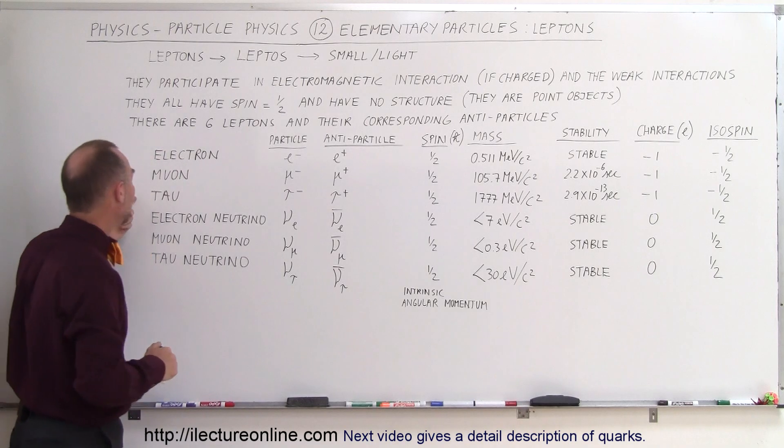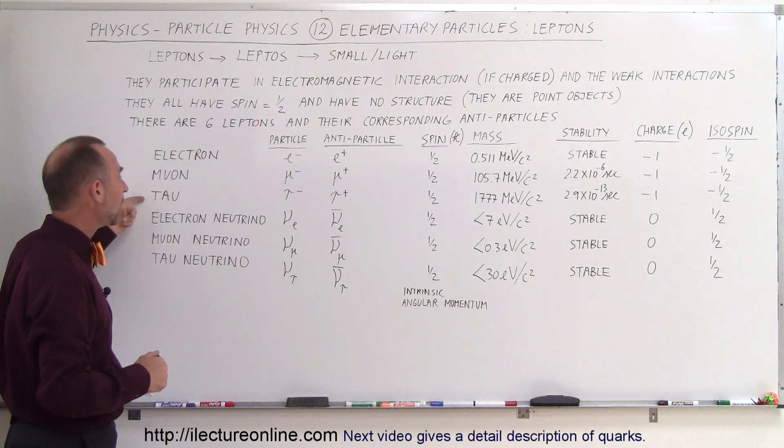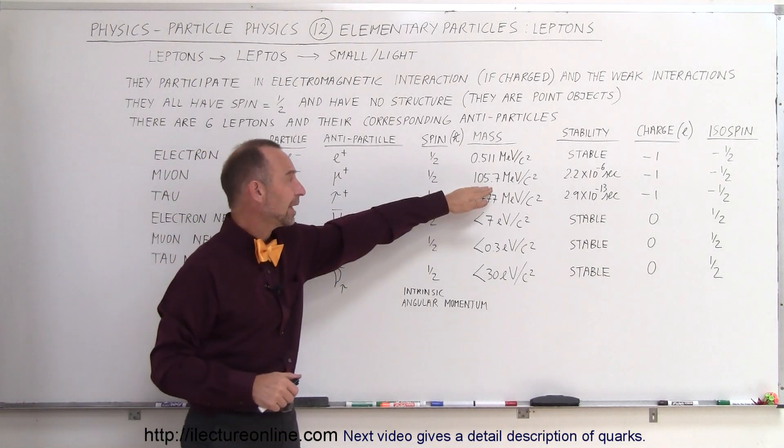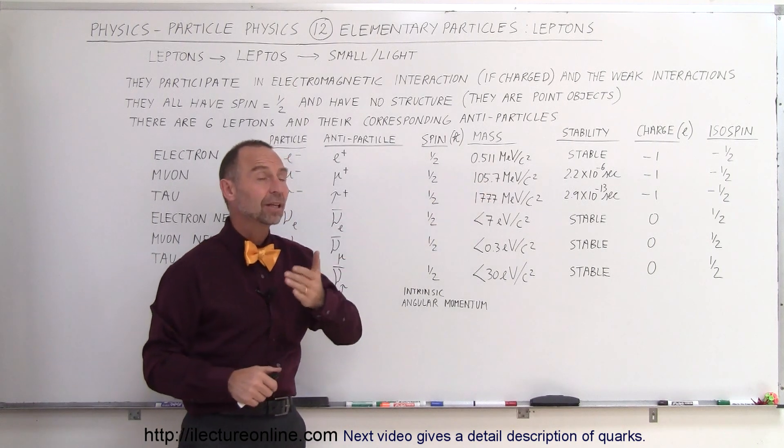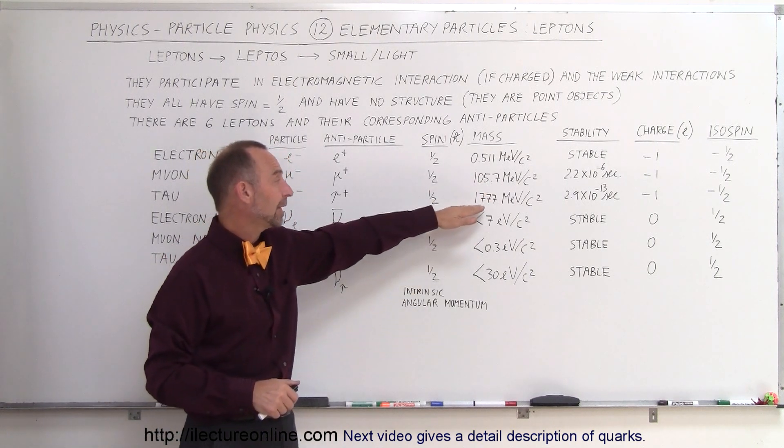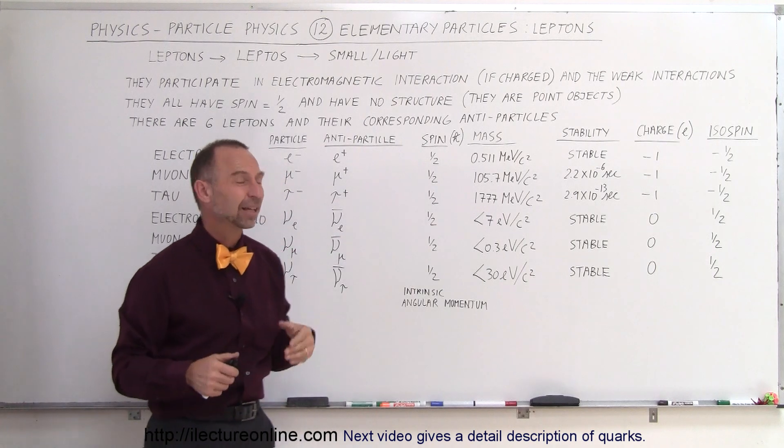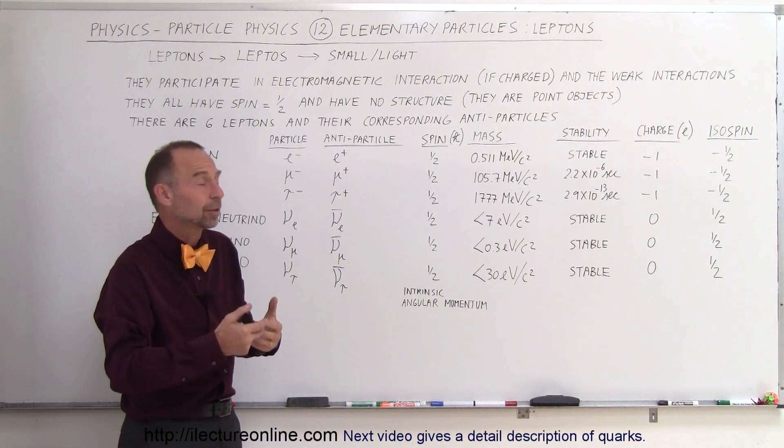Now notice that the other two, the two other particles, muon and tau, they're much larger. This one takes 105.7 million electron volts and this one would take over a billion or almost 2 billion electron volts of energy to make that particle.